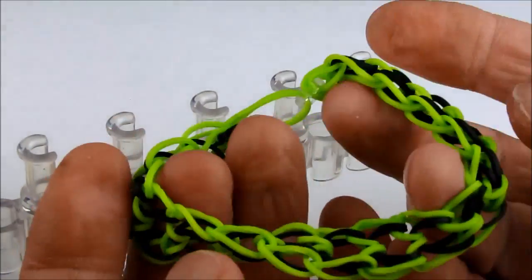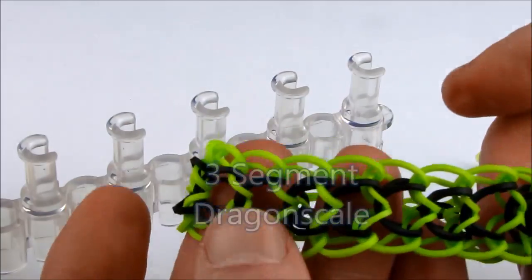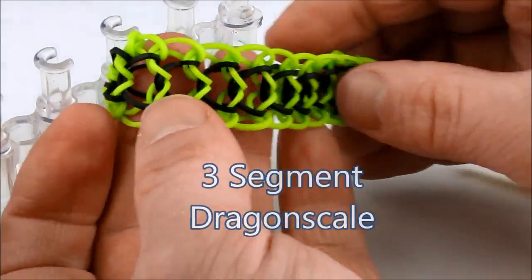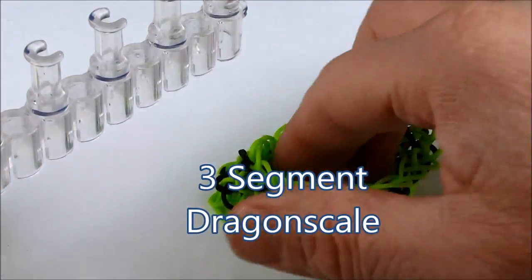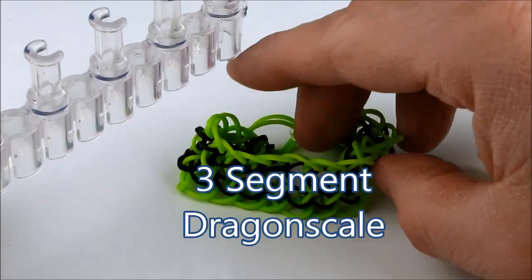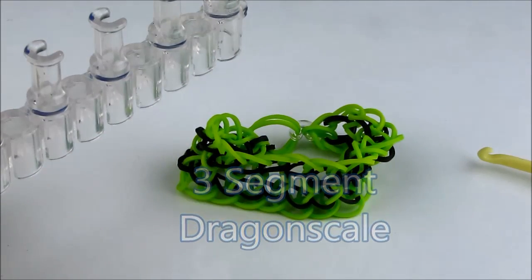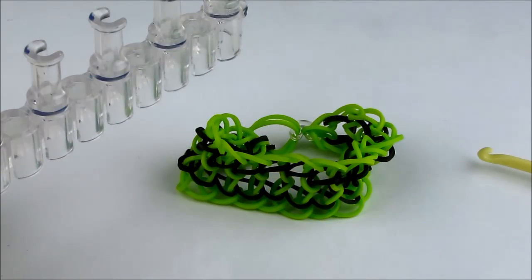And we have our finished bracelet. The three-segment dragon scale. Thank you for watching our video. Additional videos can be seen at www.rainbowloompatterns.com.